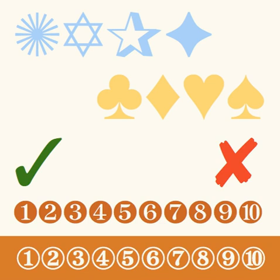ITC Zapf Dingbats STD is an OpenType version of the font family, based on the PostScript variant of the font. The glyphs are mapped to the corresponding Unicode code points. The family consists of one font, ITC Zapf Dingbats Medium, with 204 glyphs.